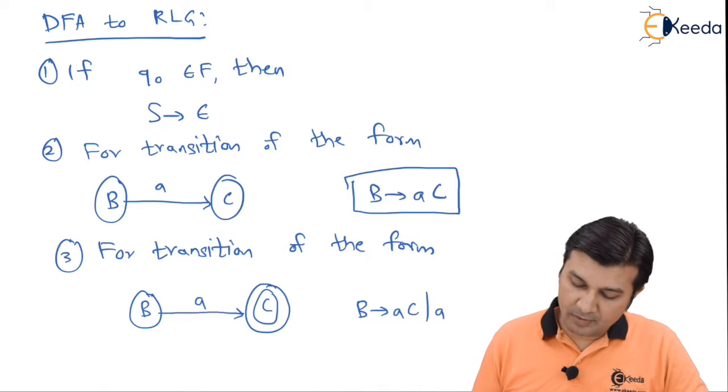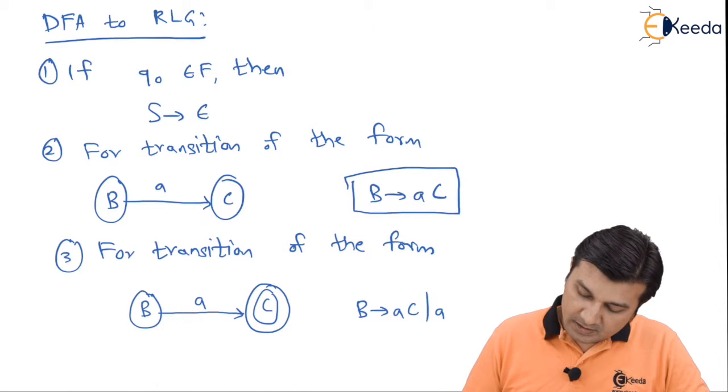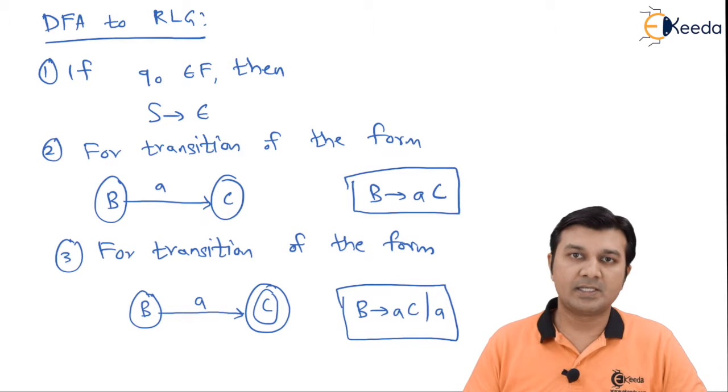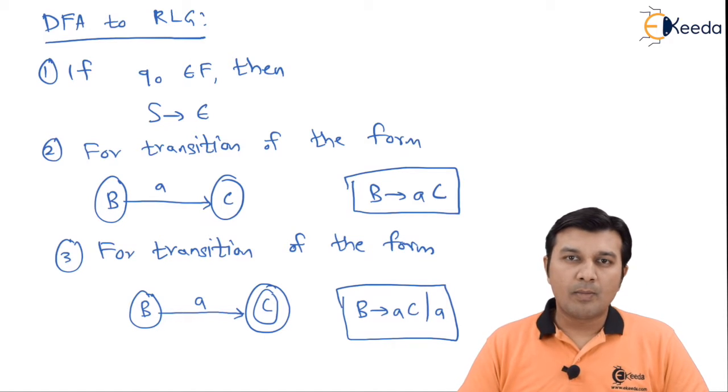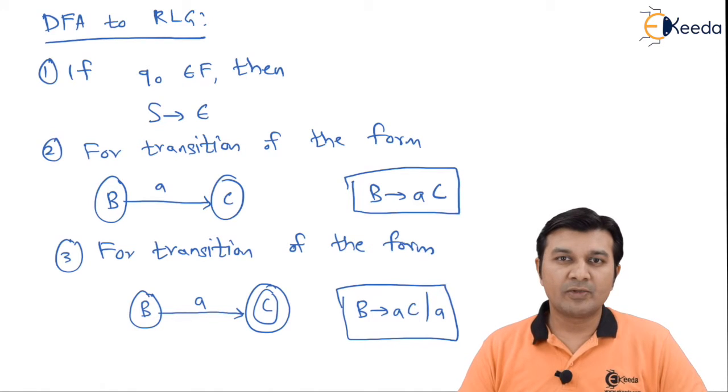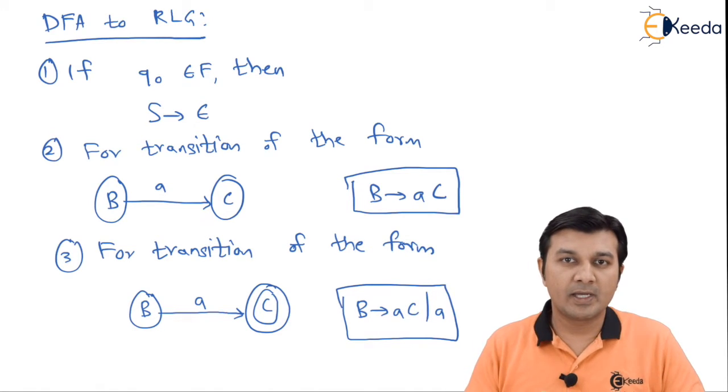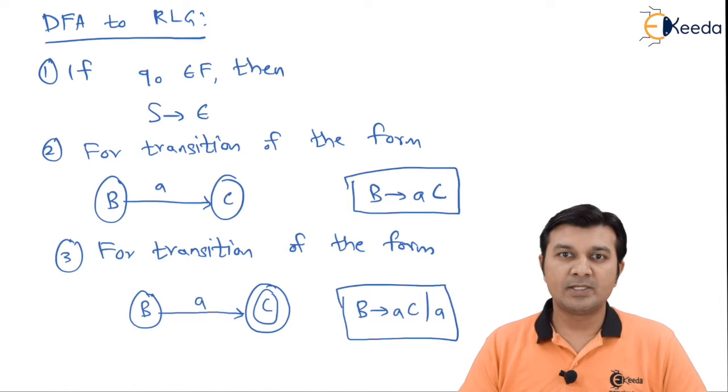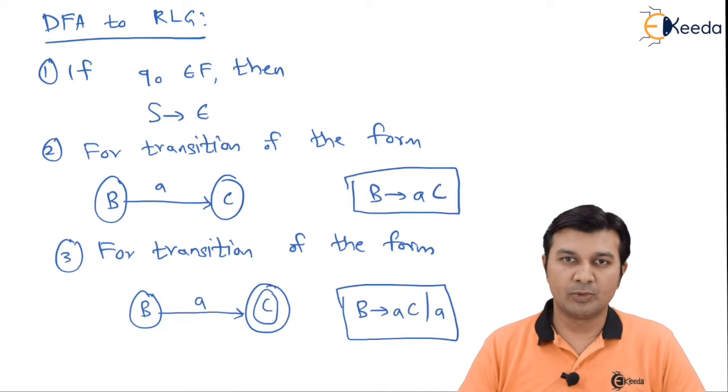Similarly, for this diagram where b on a goes to c and if c is the final state, the production rules will be of the form b gives ac or a. By now, you might be realizing that it is more of twisting of the same thing, looking at the same thing in different angles. Using these rules, we are going to solve the problem.